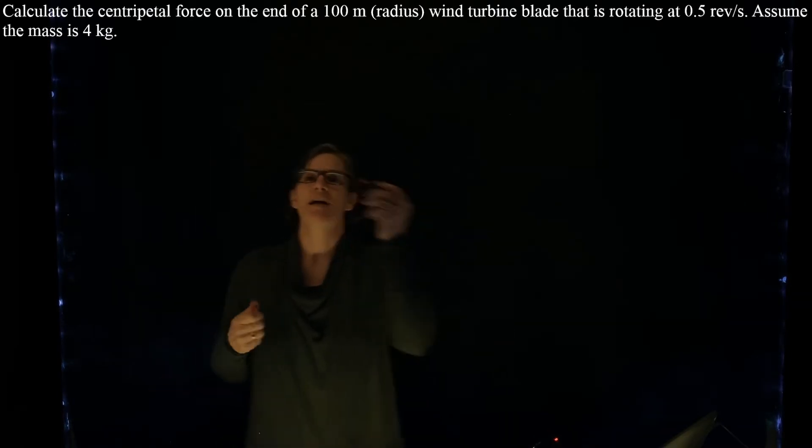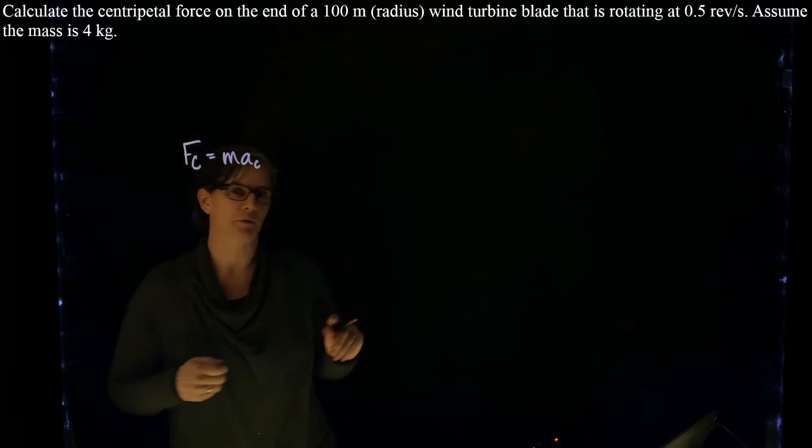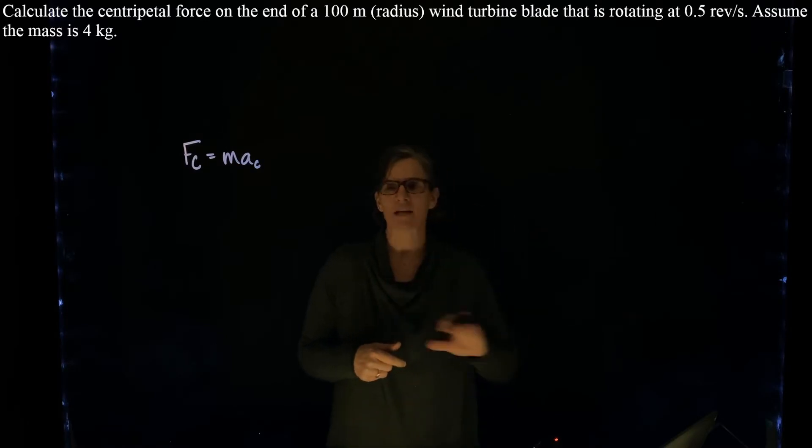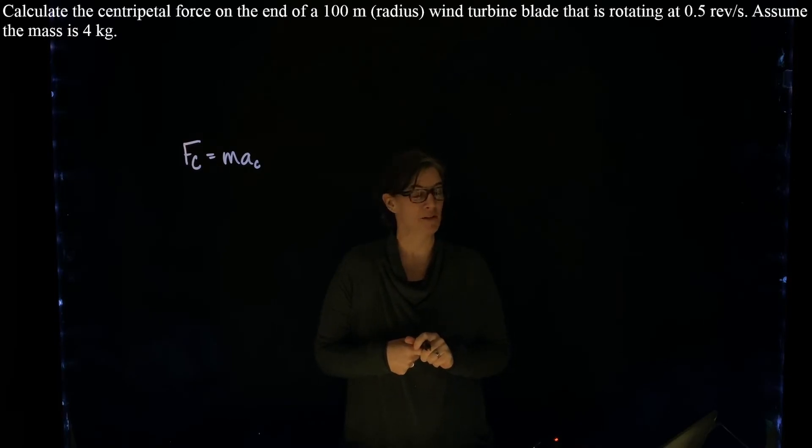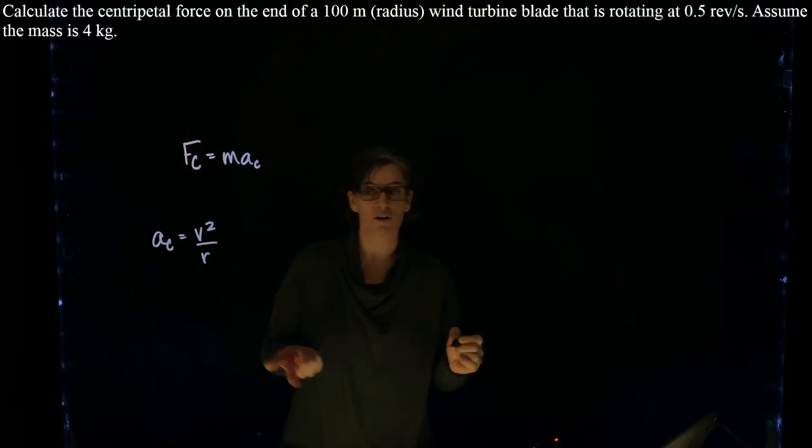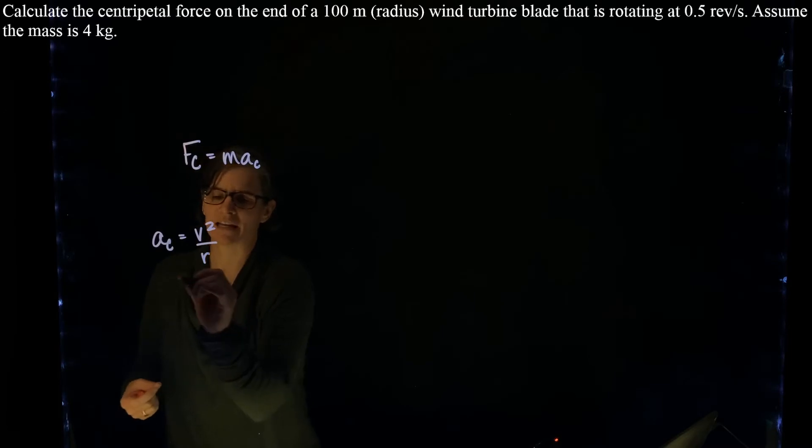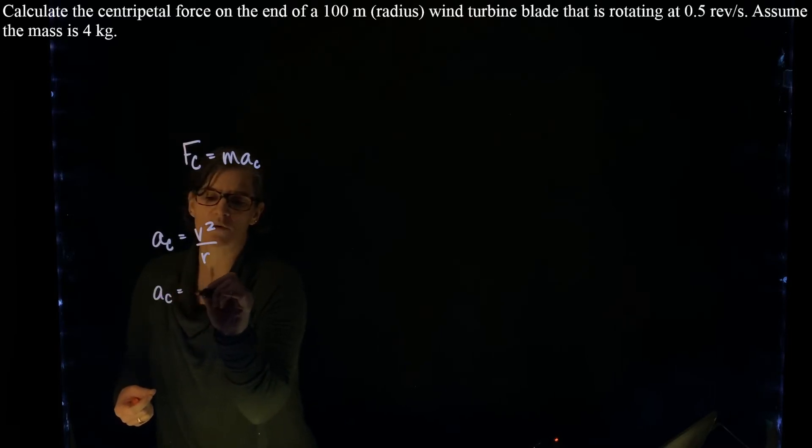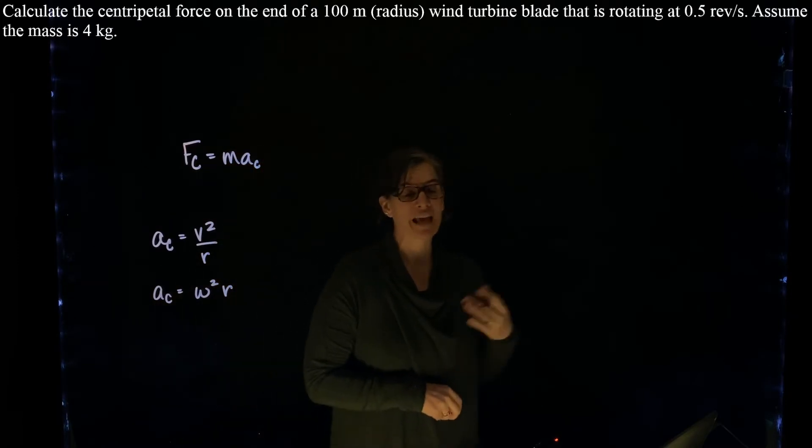So we know that the centripetal force is equal to the mass times the centripetal acceleration. So we have that mass at the end of that rotating blade, we need to know what that centripetal acceleration is. Now there's two ways to determine centripetal acceleration. It can be determined by v squared over r, so using the linear velocity at that radius. We can also determine the centripetal acceleration if we have the angular velocity.